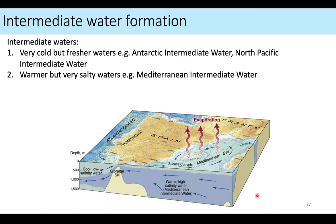The intermediate waters are cold and salty, but not as cold and not as salty as the deep waters. Antarctic Intermediate Water and North Pacific Intermediate Water are formed by taking very cold water and making it a little fresher. Mediterranean Intermediate Water is formed when warm water gets very salty.